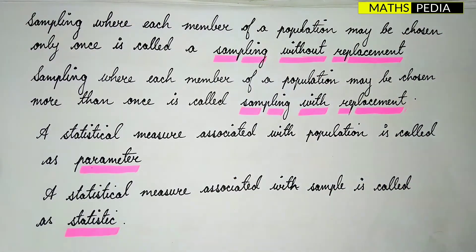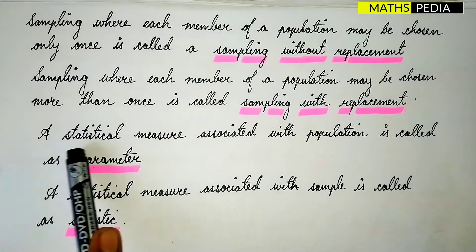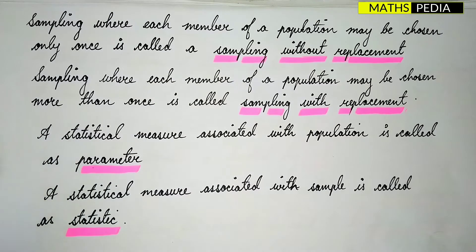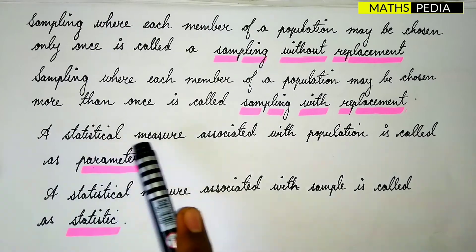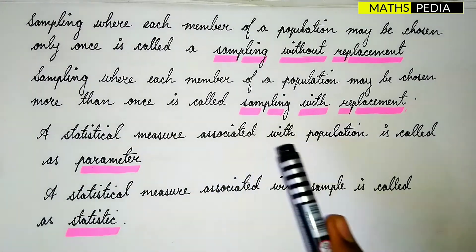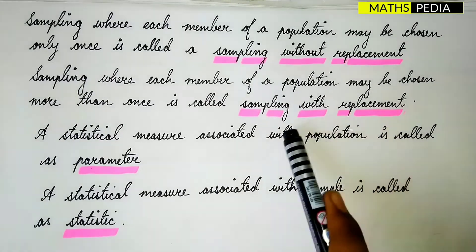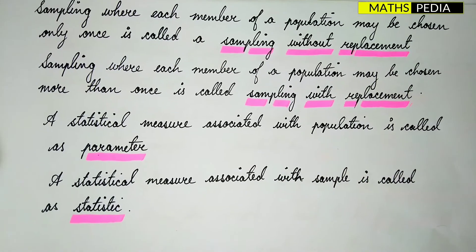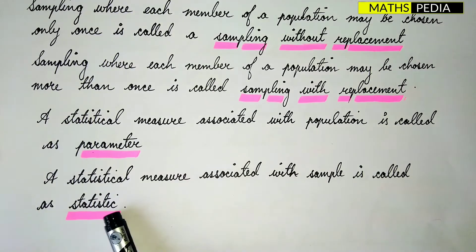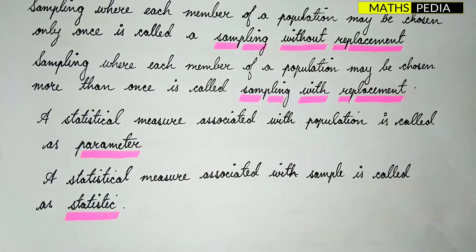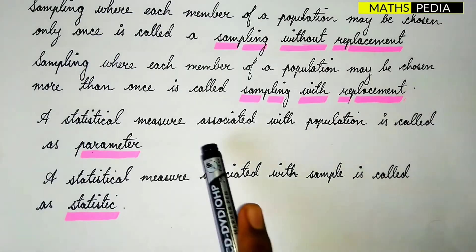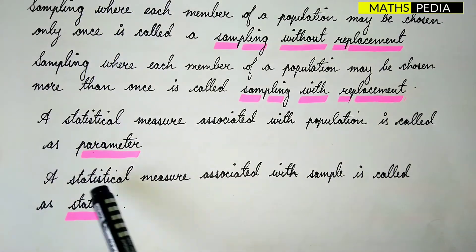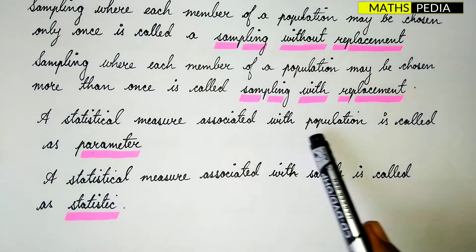The next term is statistical measure. A statistical measure can be mean, mode, or median — anything of that sort. Whenever a statistical measure is associated with the population, we call it a parameter. Whenever it is associated with the sample, it is called a statistic. Remember the difference: population is the large collection, and you take the sample from it.